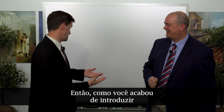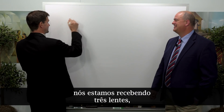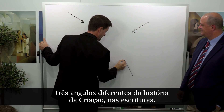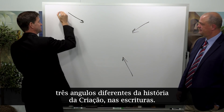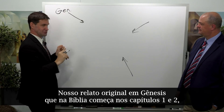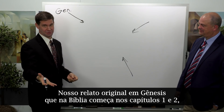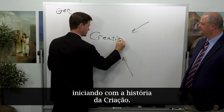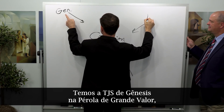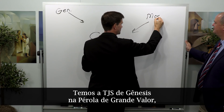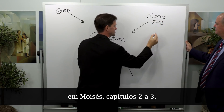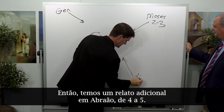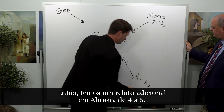We're getting three lenses, three different angles on this creation story out of the scriptures. Our original Genesis account — the Bible opens with chapters 1 and 2 beginning with this story of the creation — and then we get the JST for Genesis over here in the Pearl of Great Price in Moses chapters 2 through 3, and then we get an additional account in Abraham 4 through 5.